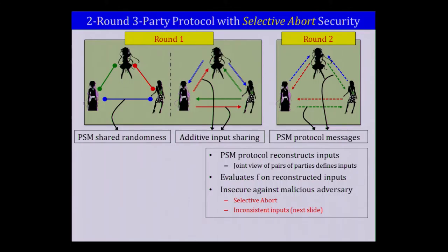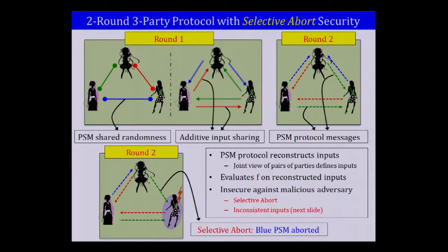This protocol is secure in a semi-honest setting but totally insecure against a malicious adversary. There are two attacks. The first is a selective abort attack: in the second round, a party can simply not send its PSM message, so one honest party does not receive all PSM messages and cannot compute the function output — effectively, the adversary denies output to that party.